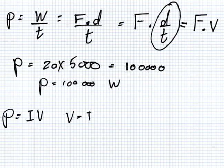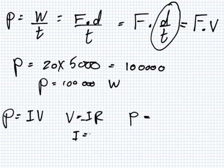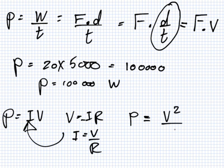So, I have power equals 20 multiply 5,000, which is 100,000. Yeah? So, power equals 100,000 watts. But you also know that power equals IV, and V equals IR. So, that means power equals I squared R.